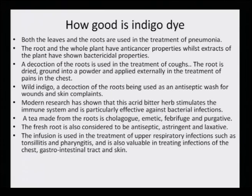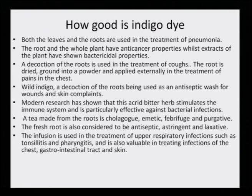Wild indigo — a decoction of the root is used as an antiseptic wash for wounds and skin complaints. Modern research has shown that this acrid bitter herb stimulates the immune system and is particularly effective against bacterial infection, which is what makes it an anti-bacterial agent. Tea made from the roots is cholagogue and emetic, febrifuge and purgative. The fresh root is also considered to be antiseptic, astringent and laxative. The infusion is used in the treatment of upper respiratory infections such as tonsillitis, pharyngitis, and is also known in treating infections of the chest, gastrointestinal tract and skin.